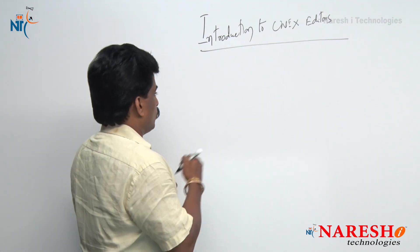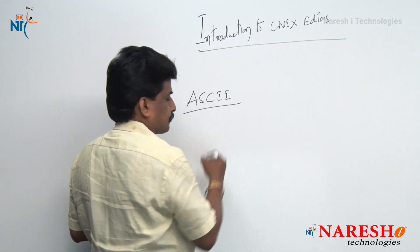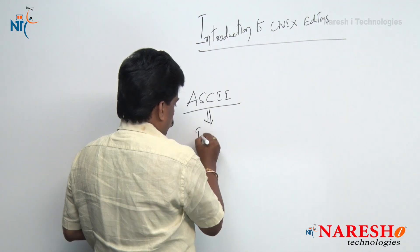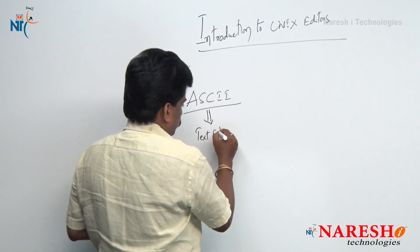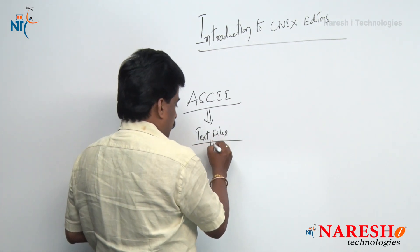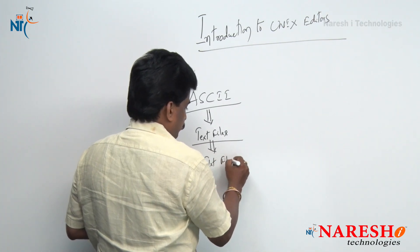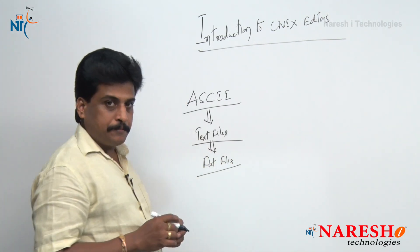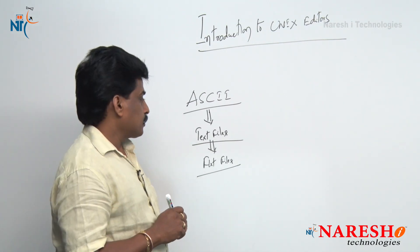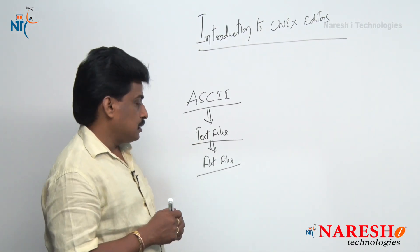Editors are popularly known as ASCII formatted files. These files are popularly known as text files. These text files' alias name is called flat files. So finally, editors produce ASCII formatted files, popularly known as text files, and their alias name is flat files.